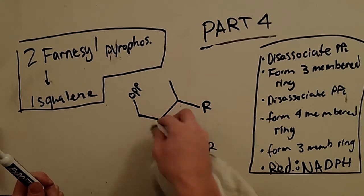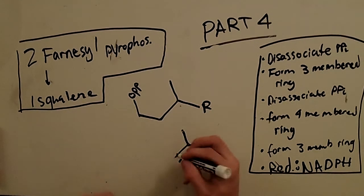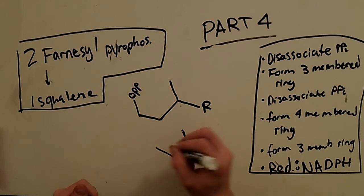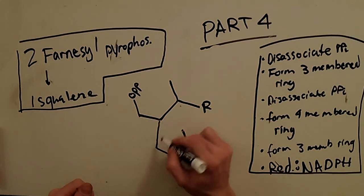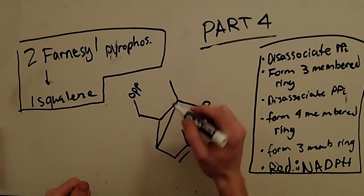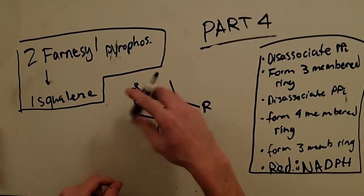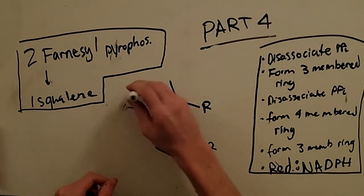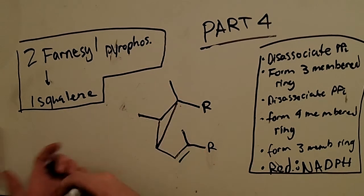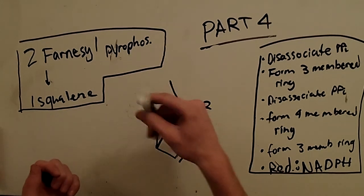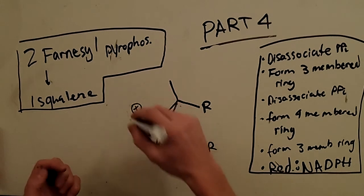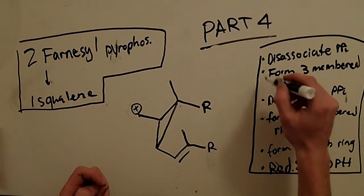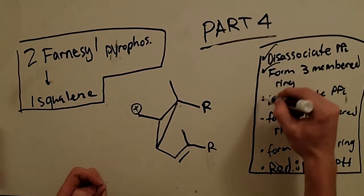Alright, so now that we've formed the first three-membered ring, we dissociate PPI again. And now it's this one. So it leaves like so. It's gone. And it leaves behind the positive charge. So these three steps. Check, check, check.